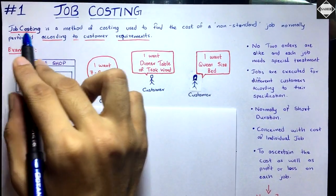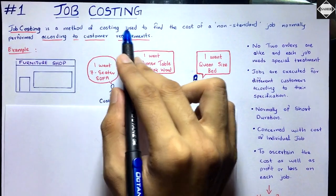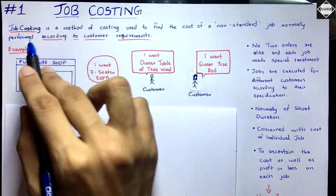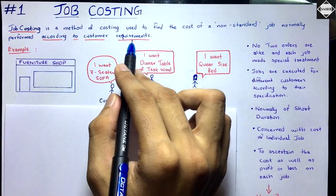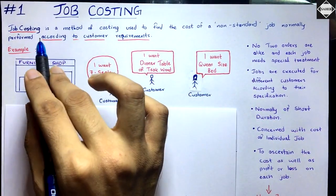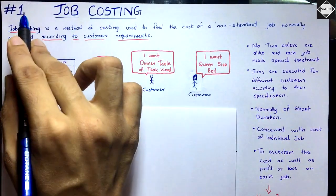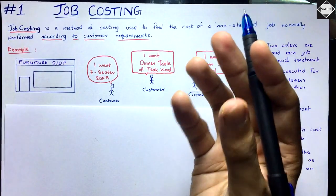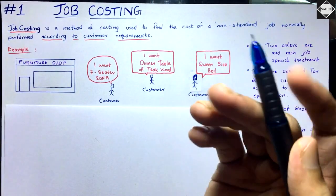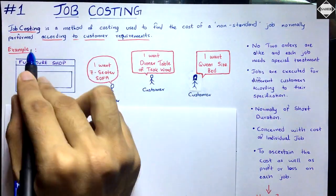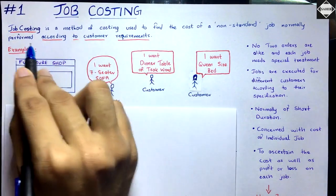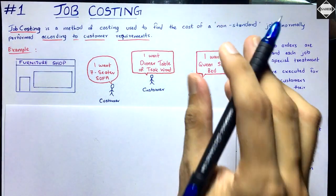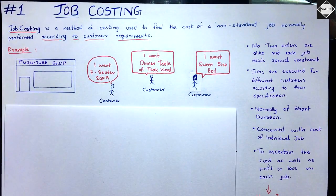Job costing is a method of costing that is used to find the cost of a non-standard job, normally performed according to customer requirements. This technique can only be applied in those businesses where the work, production, or services are provided to customers according to their specific requirements.